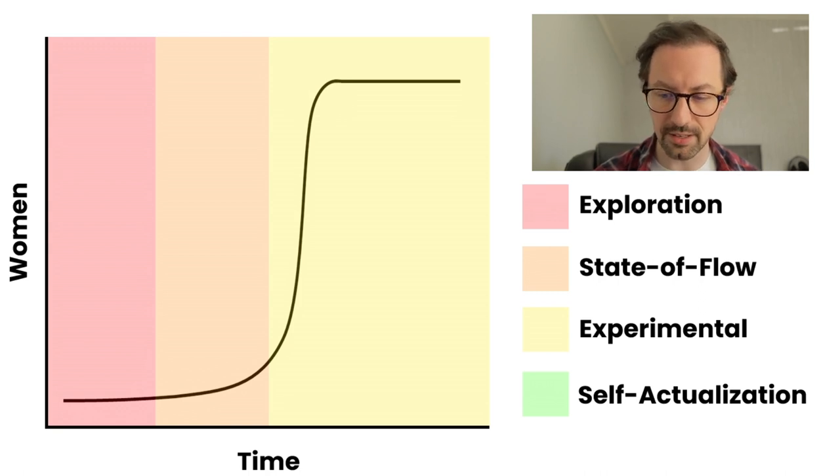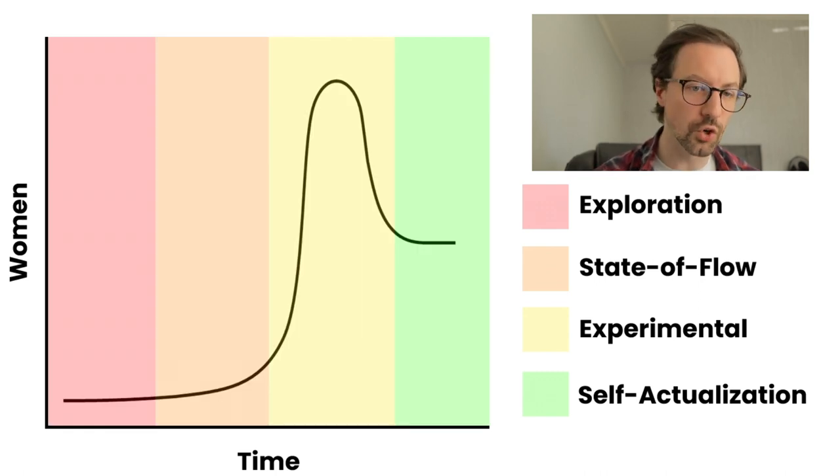Now if we compare that to what a dating coach goes through, they are the exact same as what a normal person would go through, but the amount of women that they will meet during that self-actualization phase is going to be a lot higher because this is their industry that they work in. It's their job to be talking to women and doing demonstrations and stuff. Then of course they're going to go on more dates and stuff than your normal everyday guy. But as you can see, that cycle is so much more relatable for the normal guy and a dating coach than it is for a pickup coach.